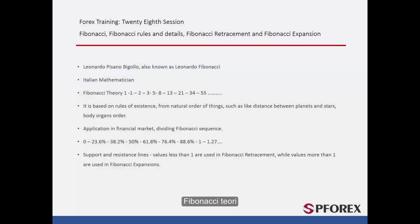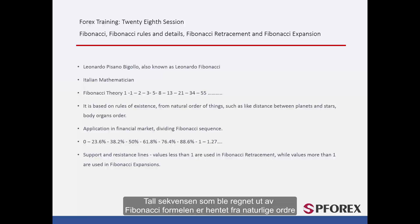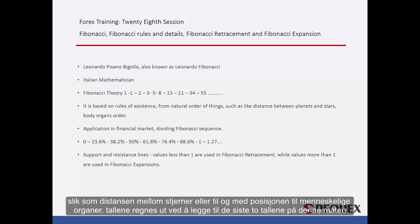Fibonacci Theory. Leonardo Pisano Bigolo, also known as Leonardo Fibonacci, an Italian mathematician, proposed his theory on population growth rate formula. The sequence of numbers calculated by the Fibonacci formula is derived from all natural orders, such as distances between stars or even the position of human organs.